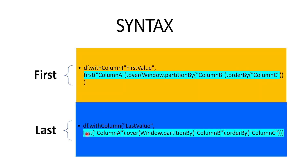And coming to last, it is quite similar to first except the keyword changes from first to last. Then we give the column whose value we need, followed by over, within which we use Window.partitionBy based on the partition column, and optionally order by. This is how first and last work. I hope you understood what window functions are, what first and last are, and how to use them.